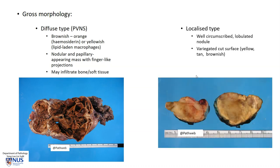The localized type usually occurs as a nodule and can be quite lobulated. The cut surface shows a variety of colors, so there may be a variegated appearance. There may be yellowish areas because of lipid-laden macrophages, brownish areas because of hemosiderin, and also paler areas.